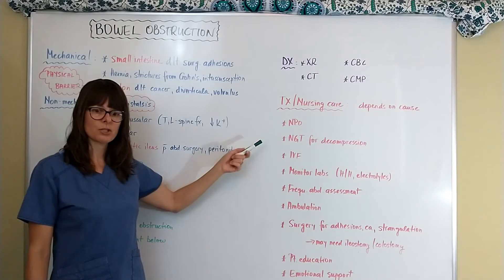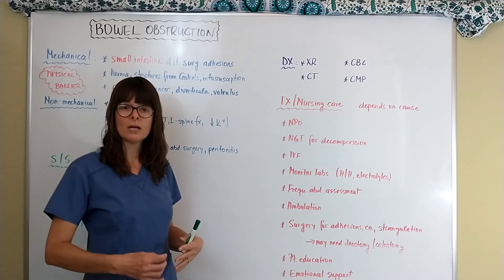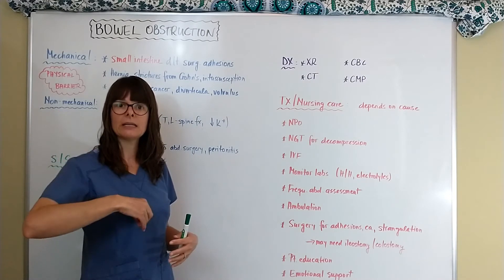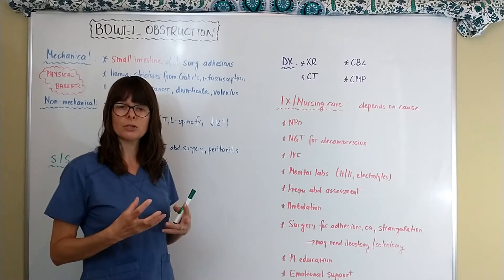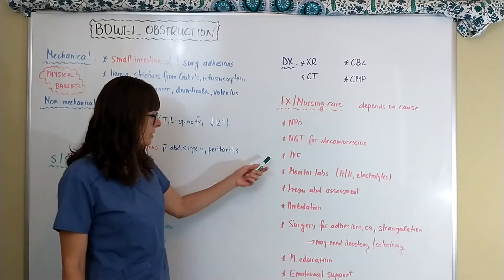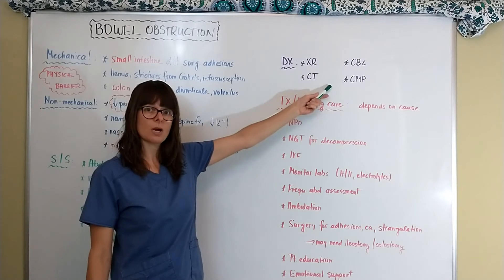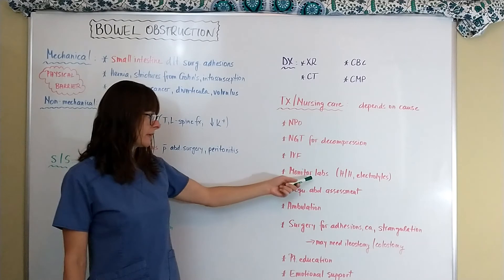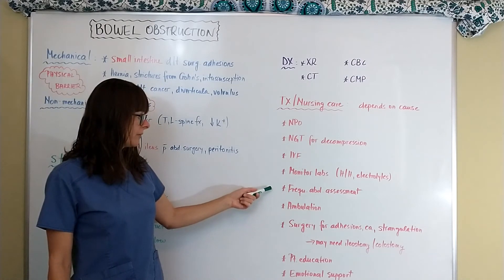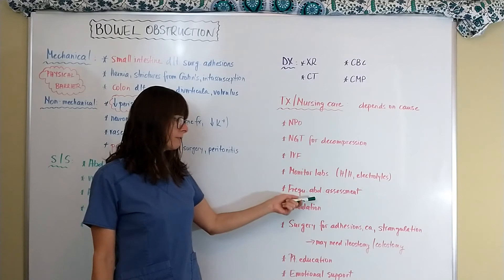The patient will need an NG tube for decompression, because even without feeding, digestive contents continue to back up. The NG tube helps remove those contents and also manages ongoing stomach acid production, preventing nausea and constant vomiting. IV fluids are required since the patient is NPO, and electrolyte replacement is likely needed. We must closely monitor labs for hemoglobin and hematocrit drops and electrolyte status, and maintain the NG tube properly.